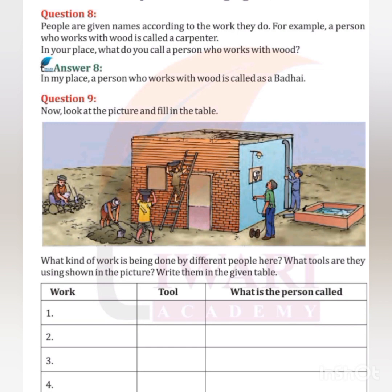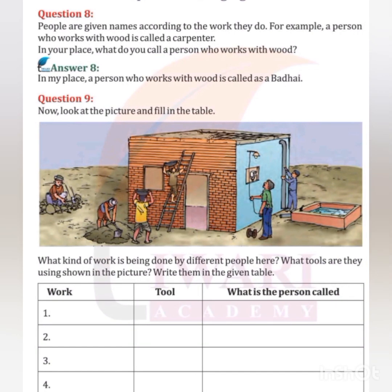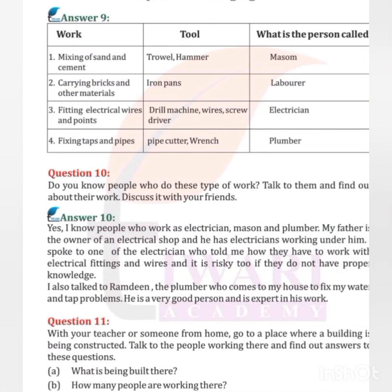Now look at the picture and fill in the table showing what kind of work is being done, what tools are used, and what the person is called. Work: mixing of sand and cement — tool: trowel and hammer — person: Mason. Work: carrying bricks and other material — tool: iron pans — person: Laborer. Work: fitting electric wires and points — tools: drill machine, wire, screwdriver — person: Electrician. Work: fixing taps and pipes — tools: pipe cutter, wrench — person: Plumber.